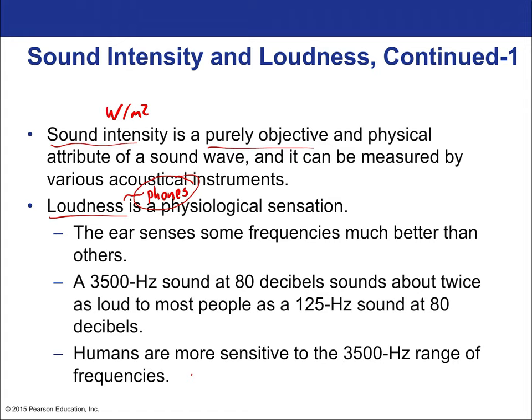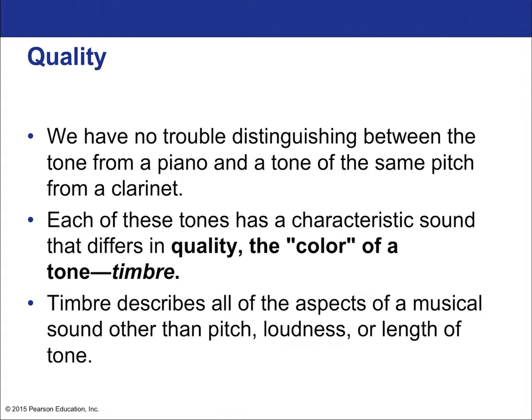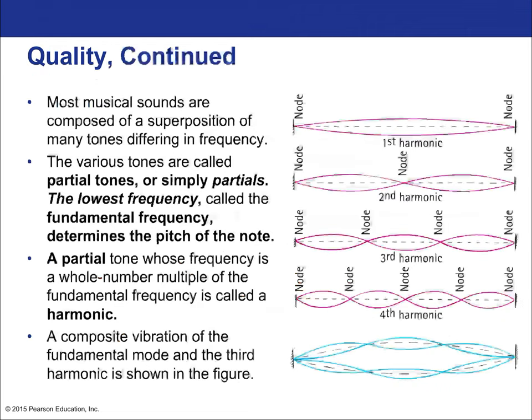Humans are more sensitive to the 3,500 hertz range of frequencies. Finally, the last attribute of music is quality. We have no trouble distinguishing between the tone from a piano and a tone of the same pitch from a clarinet — each of these tones has a characteristic sound that differs in quality. The 'color' of the tone, the timbre, is a very complicated idea having to do with the composite sounds that make up the subtle differences from different instruments. Timbre describes all aspects of a musical sound other than pitch, loudness, or length of tone.